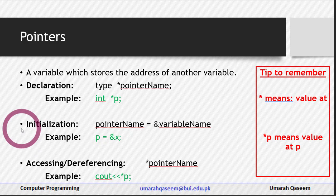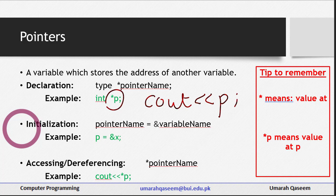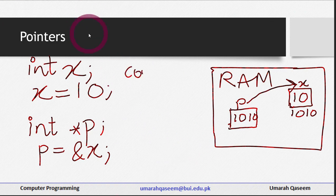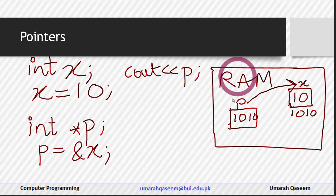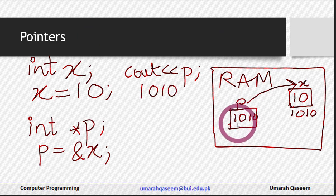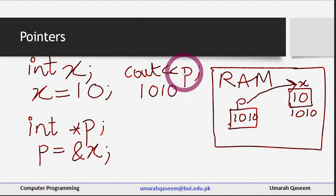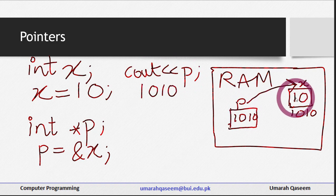Now if I simply write cout << p, what will happen? What will be printed on screen is 1010 — because p has the value 1010 in it, so that address will be printed. But we don't want that. What we are interested in is the value of x, not the address of x. So there is no use writing just p in cout — if you write p in cout, the address of x will be printed. We want the value of x.